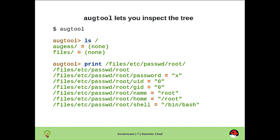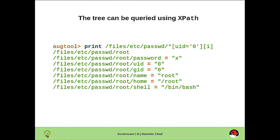We're able to print recursively the /etc/passwd file, and specifically the root user beneath that. Augeas supports a path syntax that's based on XML's XPath. We see here we're printing out entries beneath /etc/passwd where the UID is 0, and then the [1] in brackets prints out the first entry. The print command is printing these recursively, so we see each of the individual fields and their values.